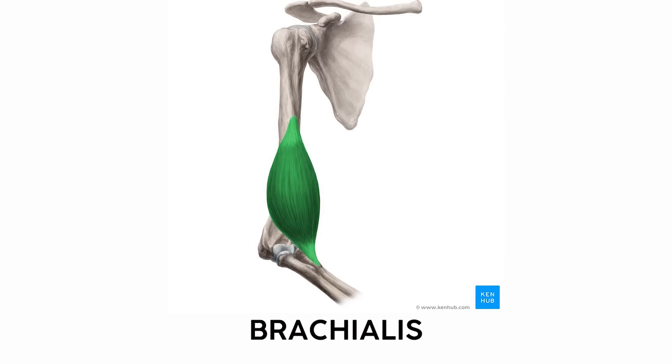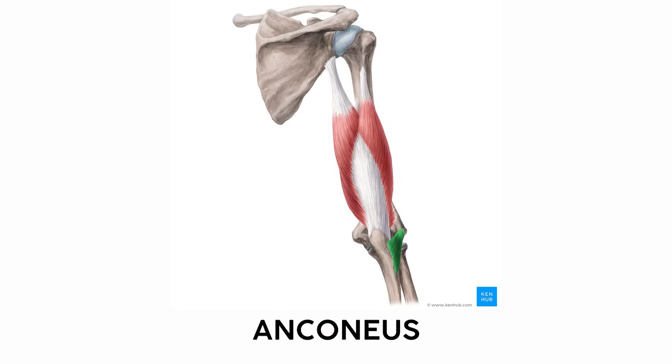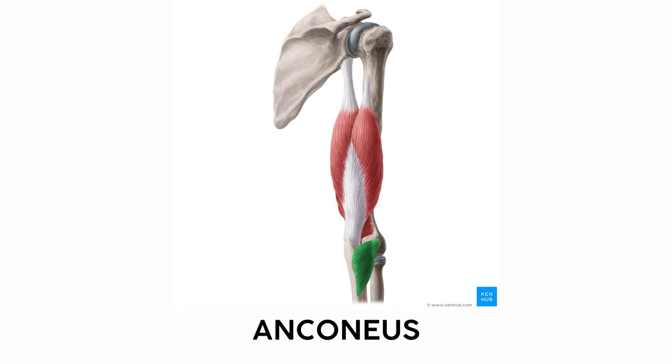Honestly, I just used the process of elimination to remember the brachialis — the biceps and brachioradialis had more intuitive names, so the last upper arm muscle has to be the brachialis. Finally, there's a small muscle on the backside of the arm that extends the elbow a little bit, called the anconeus. It's not as powerful as the triceps, so it's a wee accessory muscle. I remember this one because if you make a cone out of your arm, the very tip is the anconeus.